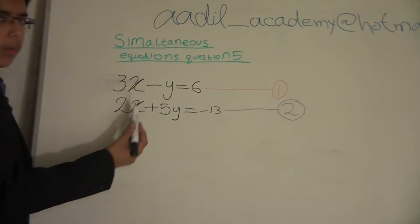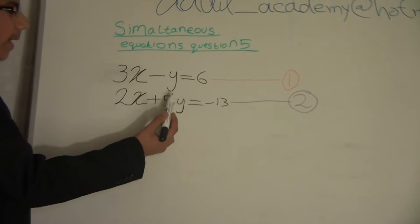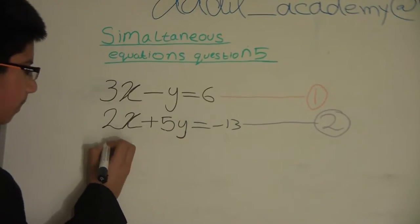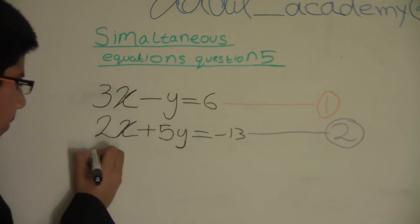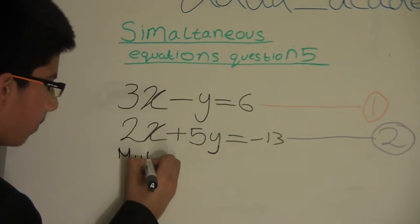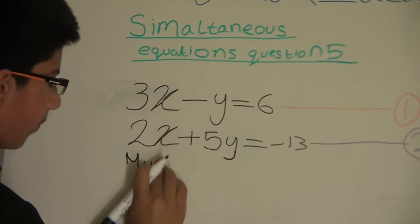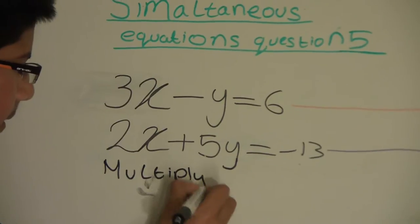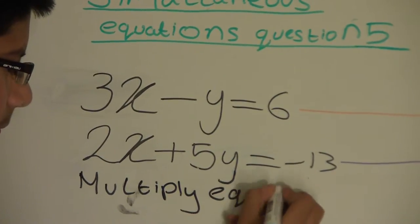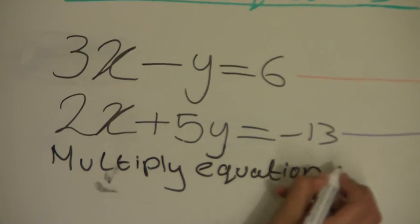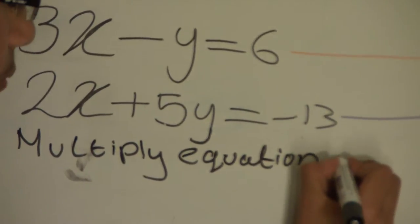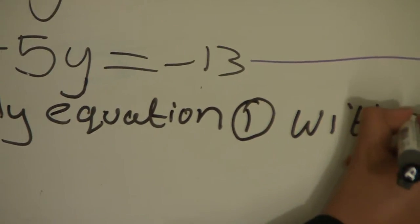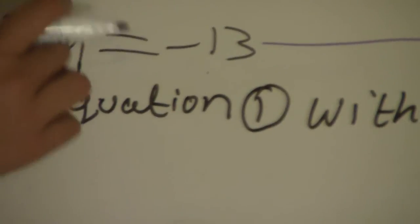We will have to multiply equation number 1 because we want to make the two y's the same so we can cancel them. So underneath equation number 2 we will write: multiply equation 1 by 5, so these two can be the same.